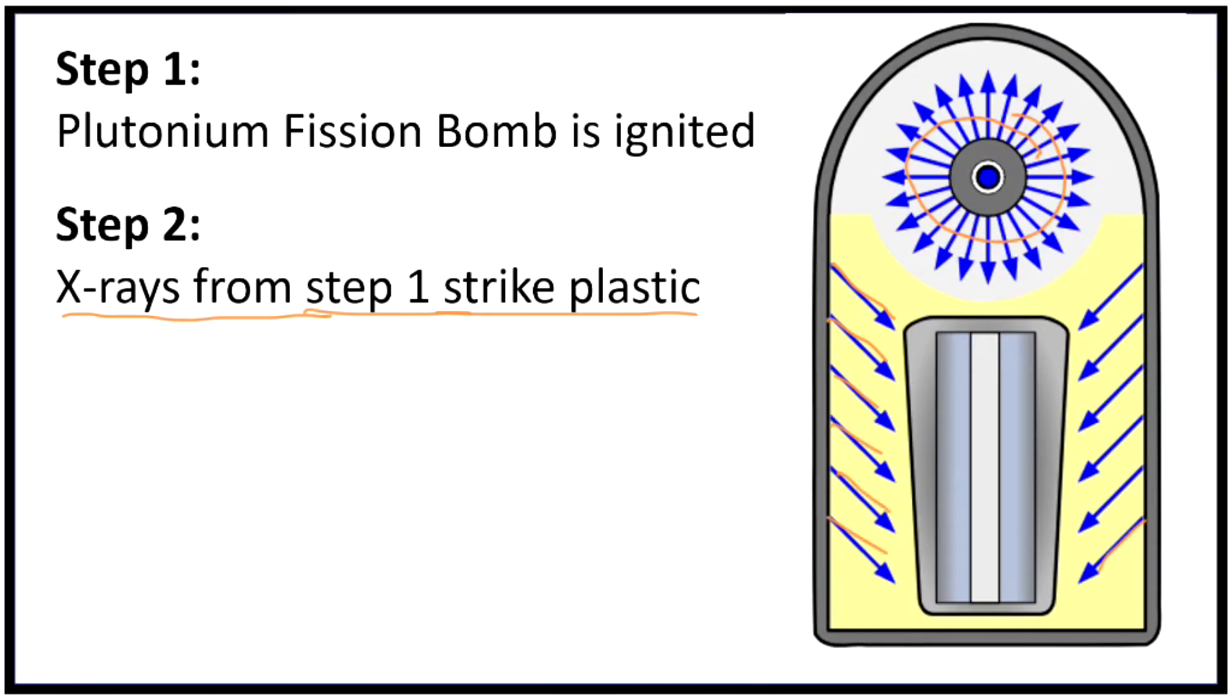And what this does is it heats up that plastic and actually creates a plasma out of it. And that plastic and that high temperature play a critical role in transferring enough energy to our plutonium core here, this plutonium spark plug, to get it to undergo fission. This is the step, by the way, where there's the most uncertainty. This is just one proposal for how the energy from the implosion bomb gets transferred to our plutonium spark plug. There's other proposals as well.